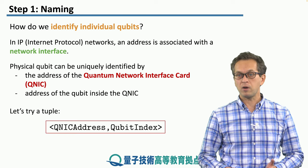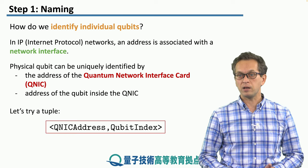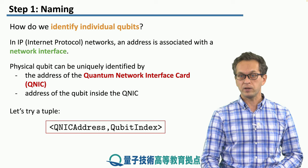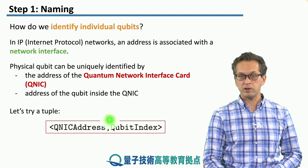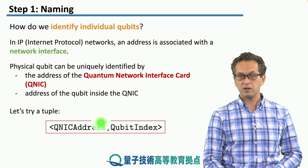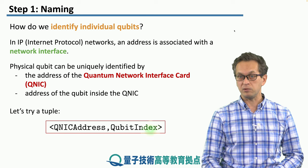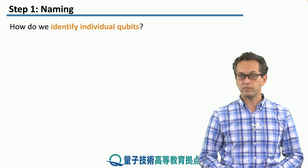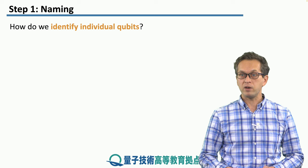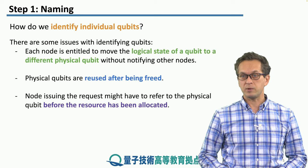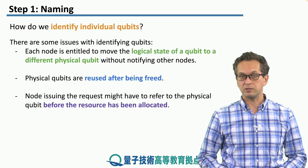And it can be uniquely identified by the address of the qubit inside the QNIC. So our first try on naming a particular qubit could be something like the following tuple: a QNIC address followed by the qubit index inside the QNIC. However, there are some issues that we must think about.